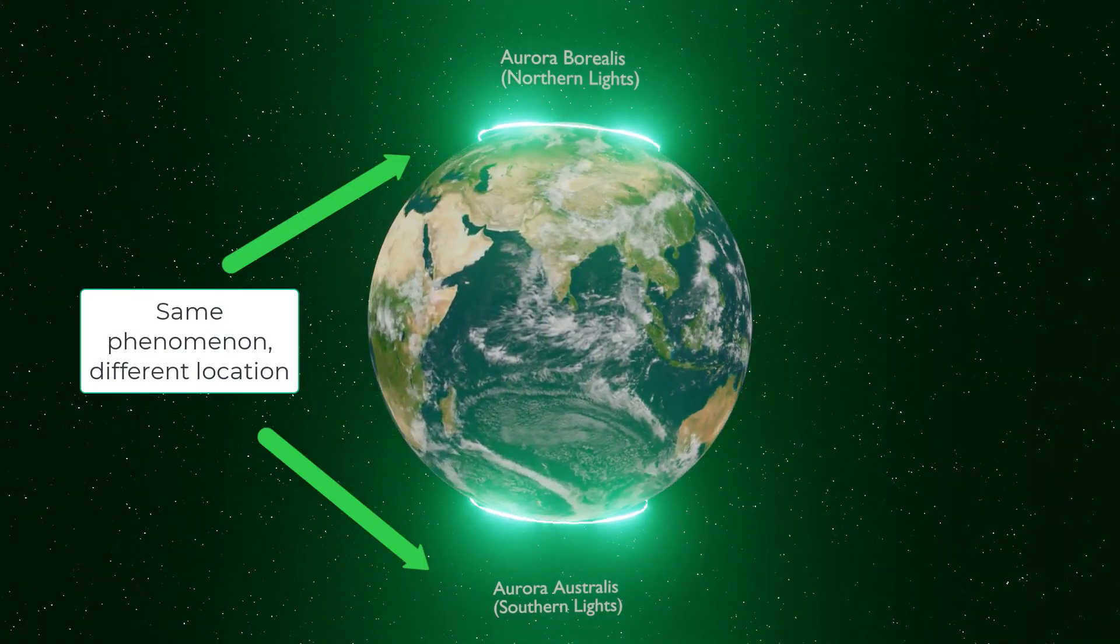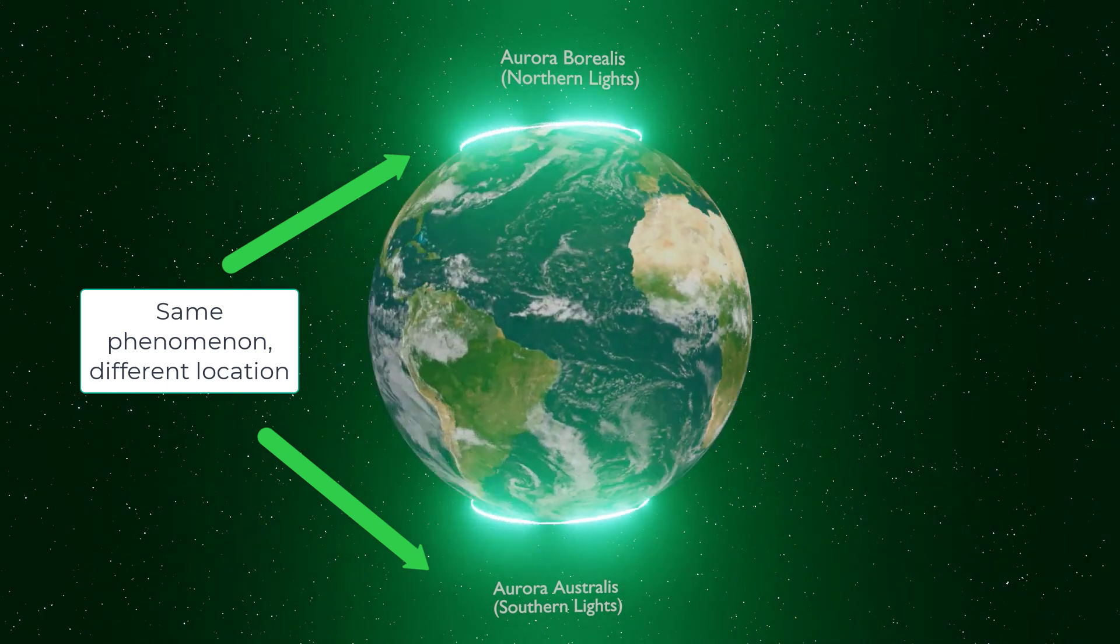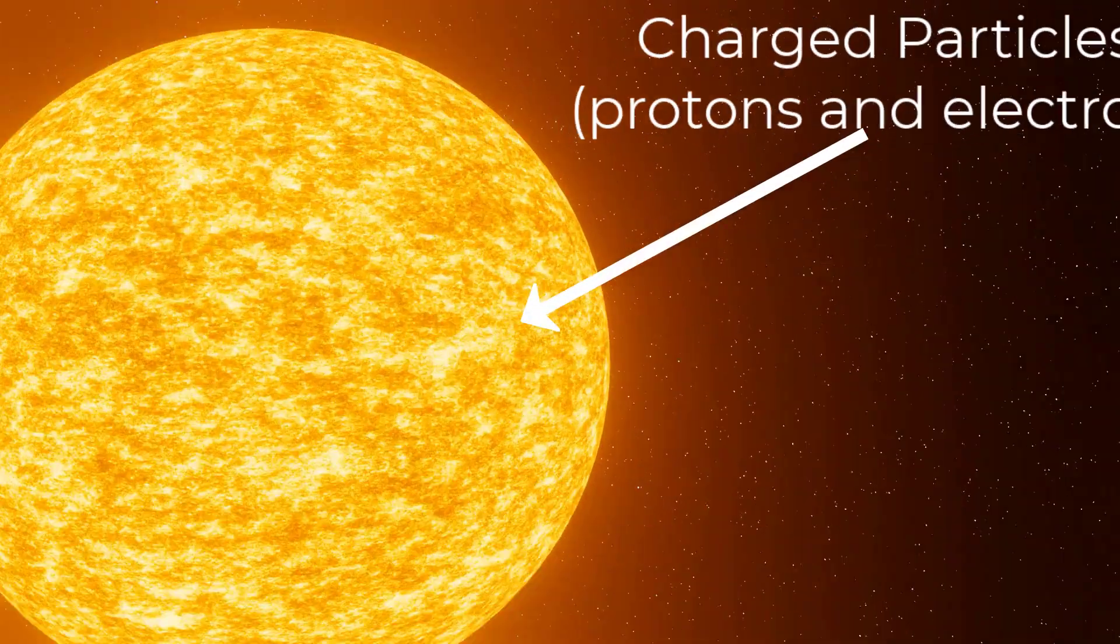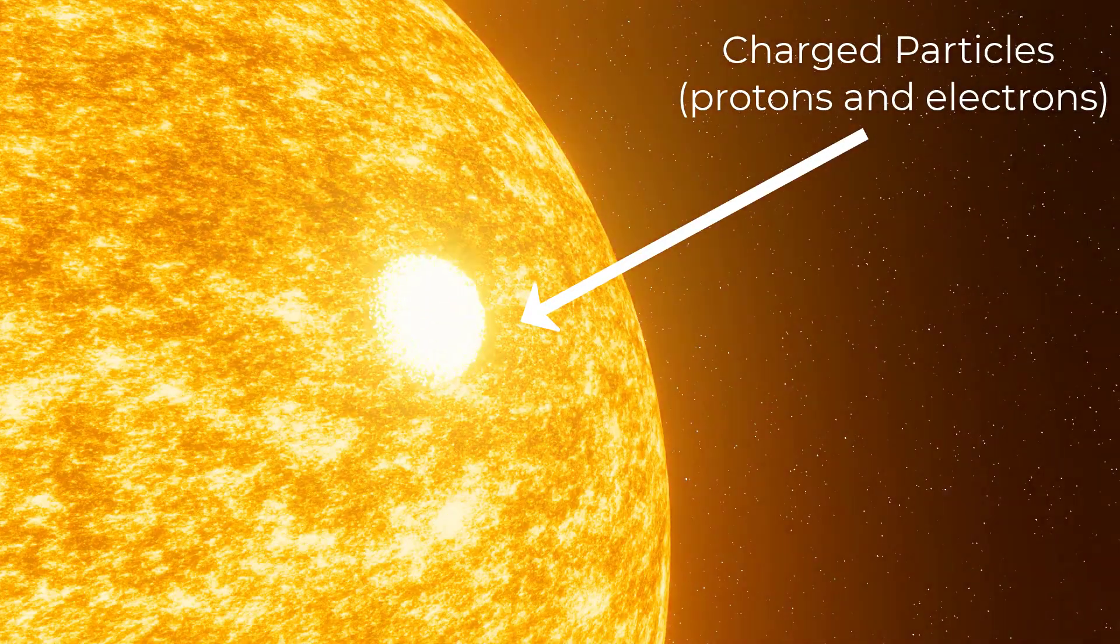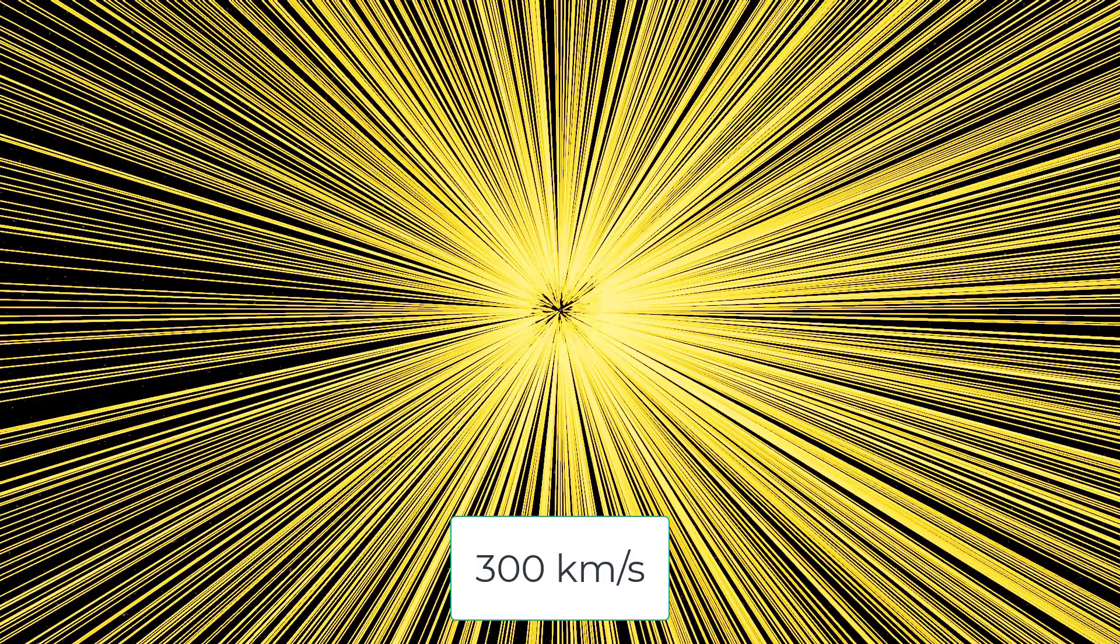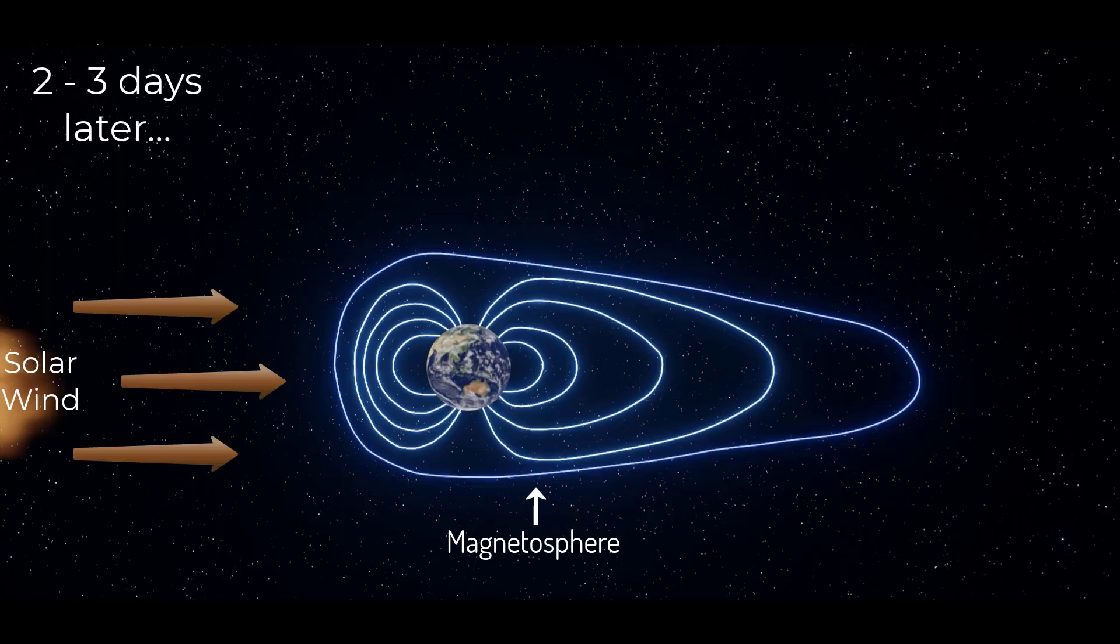Although auroras are mostly found near Earth's geomagnetic poles, their story starts 150 million kilometres away. The sun is constantly emitting plasma, we call the storm of charged particles the solar wind, and it speeds through space at 300 kilometres per second.